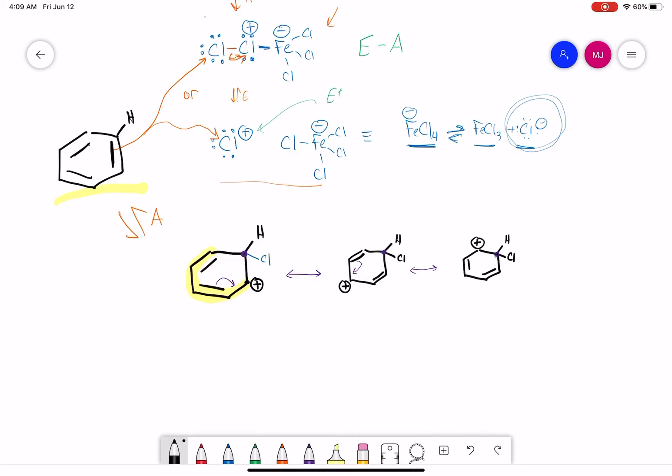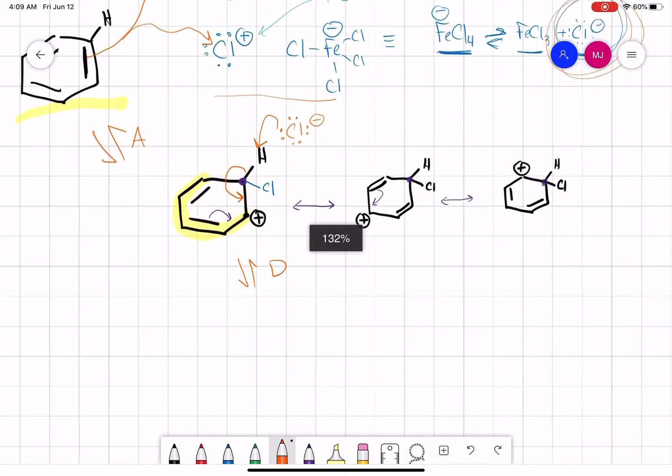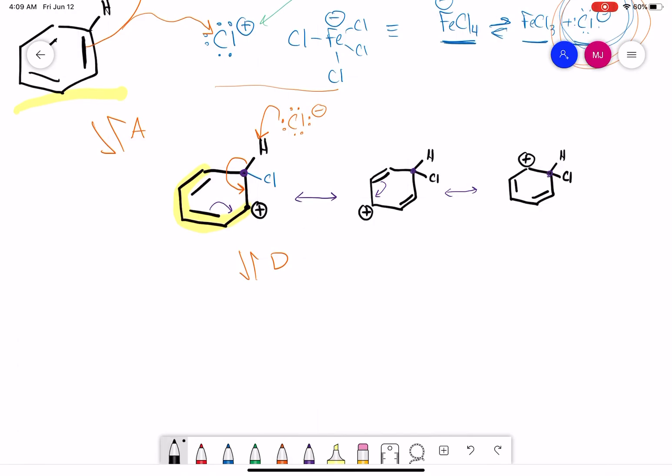And then to finish our mechanism, it's quite simple. I'm just going to take a lone pair. We'll take our Cl minus, and we're going to deprotonate that hydrogen on that same sp3 hybridized carbon. So this lone pair will steal that H. These two electrons will reform our double bond, reform our aromatic compound. So we deprotonate that hydrogen.